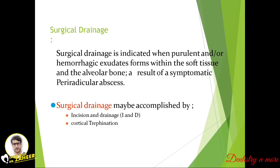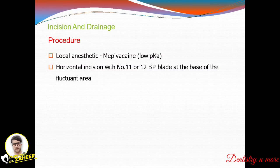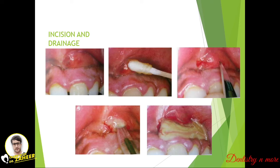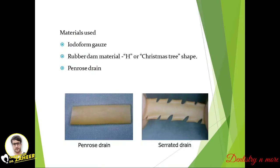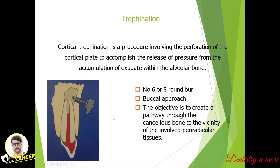Surgical drainage is indicated when a purulent or hemorrhagic exudate forms within the soft tissue and alveolar bone as a result of an acute peri-radicular abscess. We can either perform I&D or cortical trefination. I&D is performed by giving local anesthesia and a horizontal incision with a number 11 or 12 BP blade at the base of the fluctuation area to remove the pus. Commonly used drain materials are rubber dam material and Penrose drain.